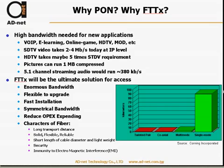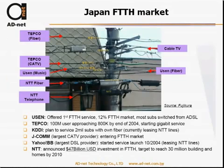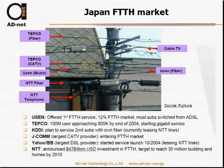FTTX will be the ultimate solution for access. It delivers enormous bandwidth, is flexible to upgrade, enables fast installation, and provides symmetrical bandwidth — something DSL cannot offer, since its uplink speed is slower. It also reduces OPEX. Fiber is immune to electromagnetic interference, provides strong security, and supports long transport distances. As an example, NTT in Japan announced a 47 billion US dollar investment in FTTH, targeting 30 million buildings and homes by 2010.